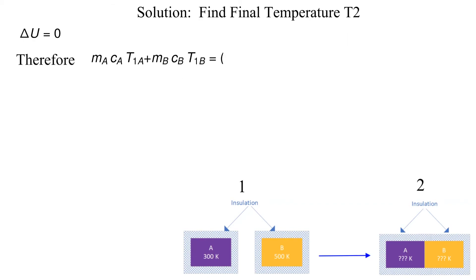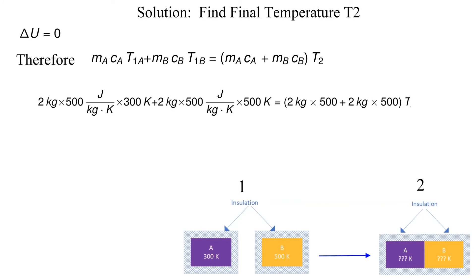Using the fact that the change in internal energy of the closed system is zero allows us to solve for the final temperature denoted as T2. The details are provided here.